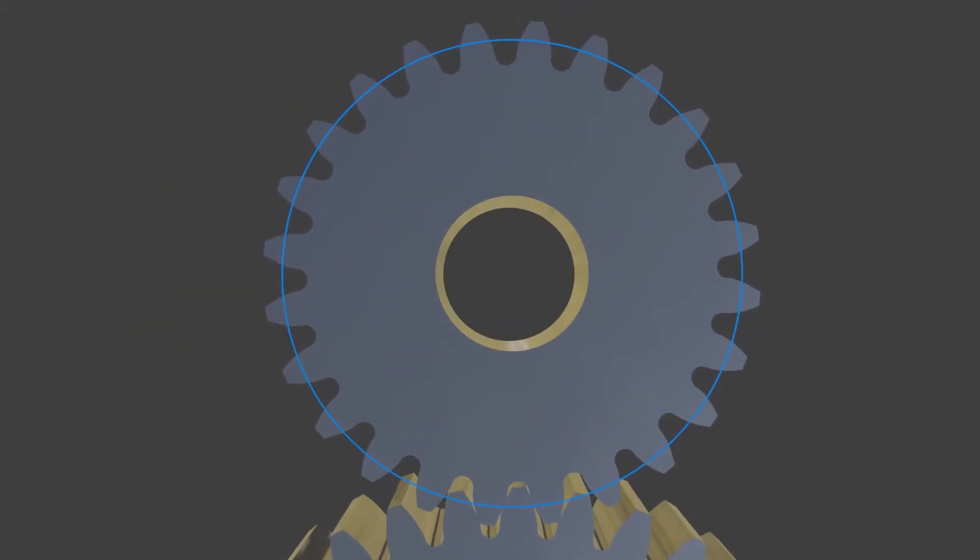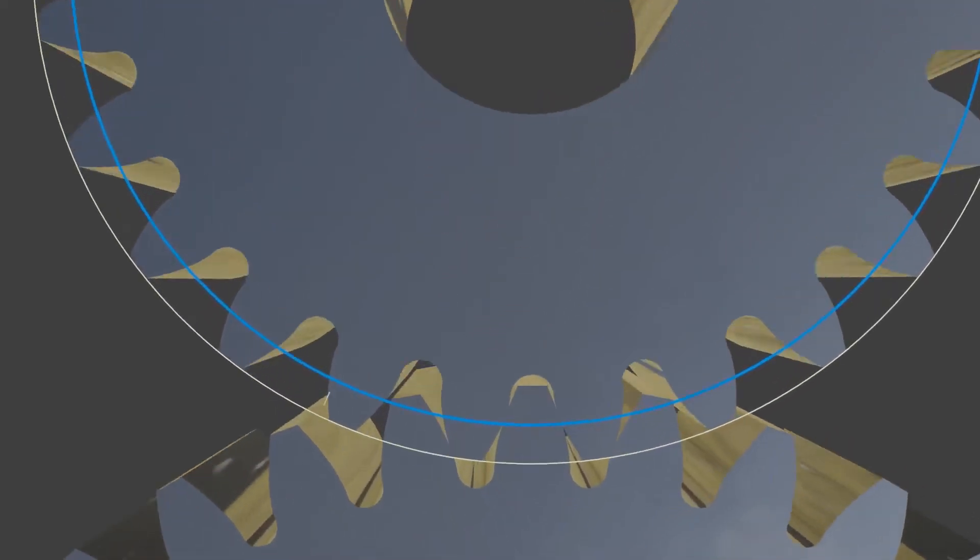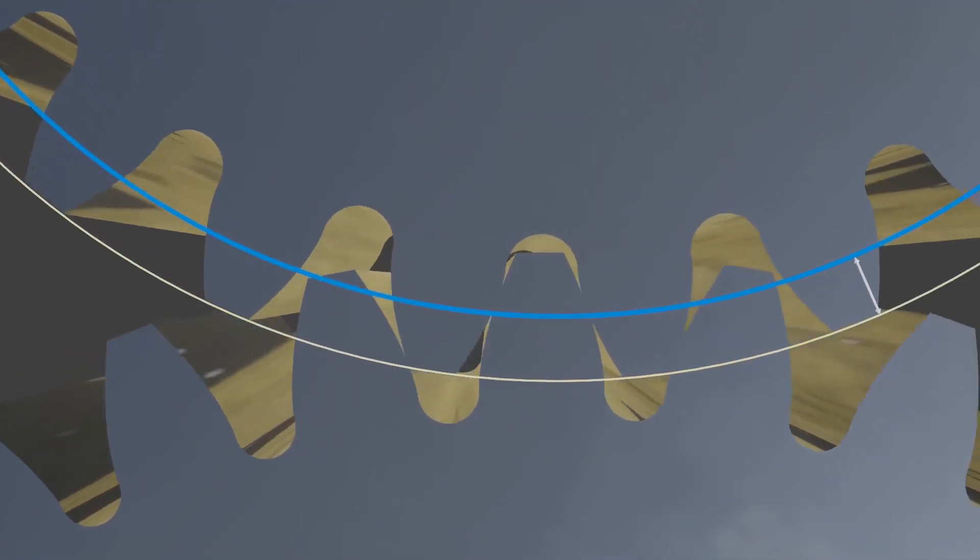The addendum is the radial distance from the pitch circle to the top line of each tooth.